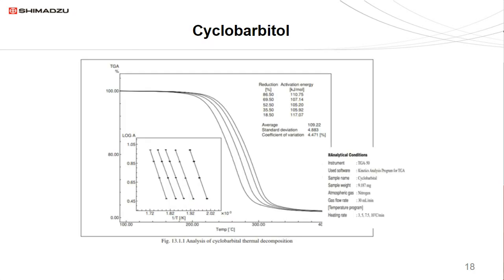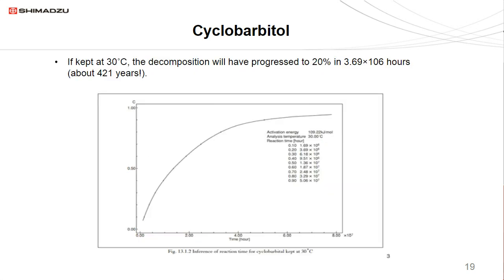Here is one example with cyclobarbital. We have an overlay of thermograms at different heating rates of 3, 5, 7.5, and 10°C per minute. We overlay these and then measure the slope of each curve and take the average — that slope indicates the activation energy. Once we measure the average activation energy based on the different heating rates, we can plug it into the formula and find that at 30°C, the material will decompose by 20% in 421 years. This kinetic software is very useful for materials with very slow reaction processes.